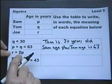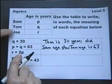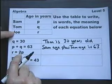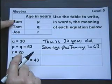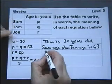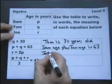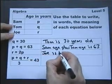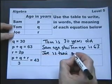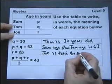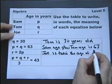R equals 2P. Joe is twice as old as Sam. R, which is Joe, is twice the age of Sam.